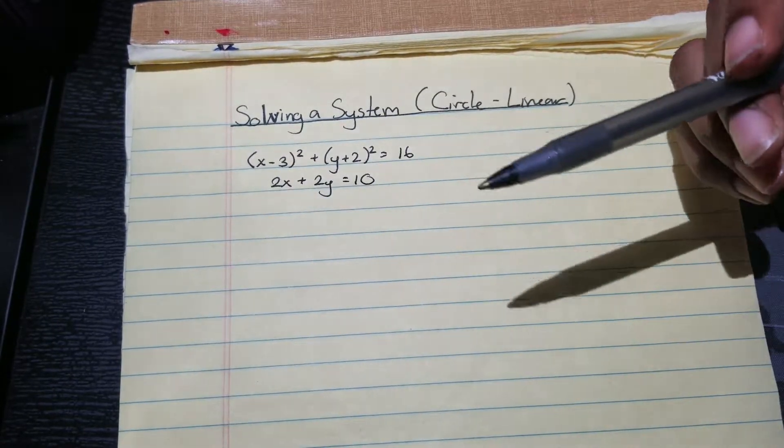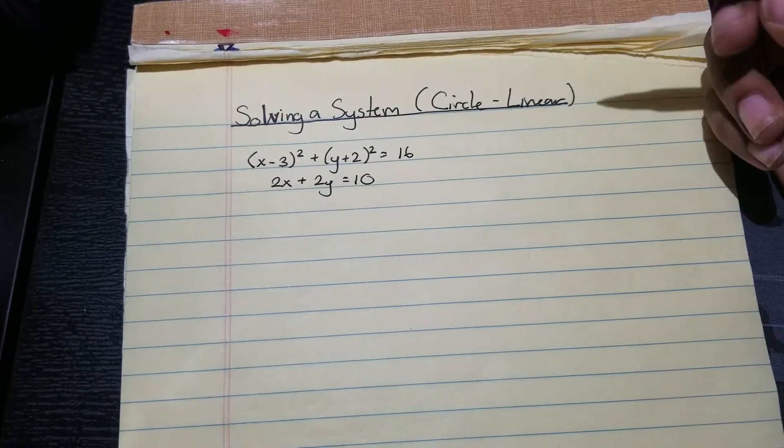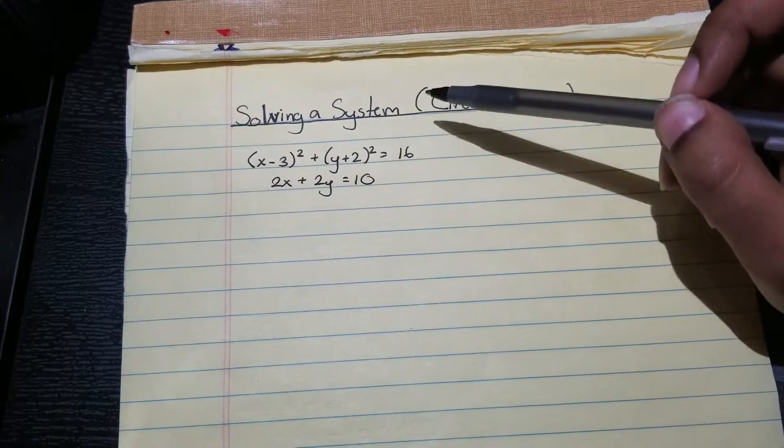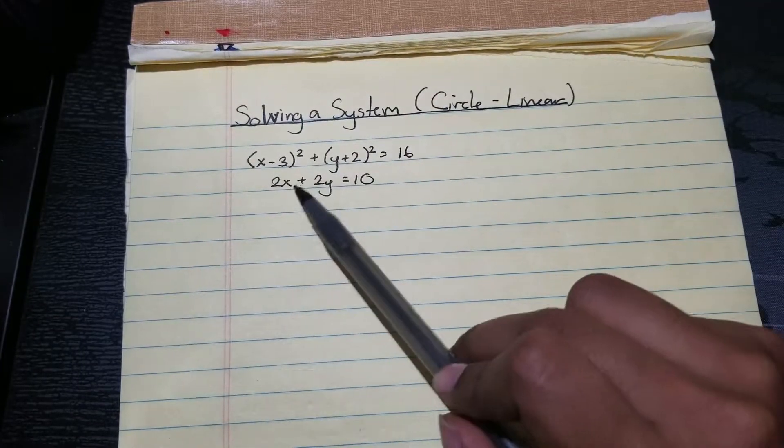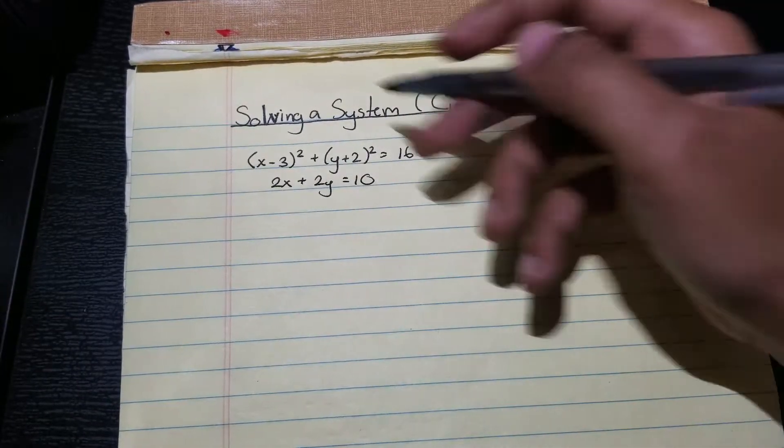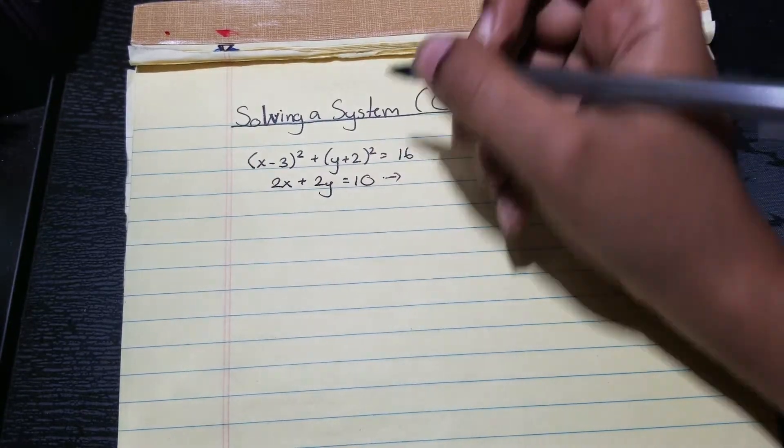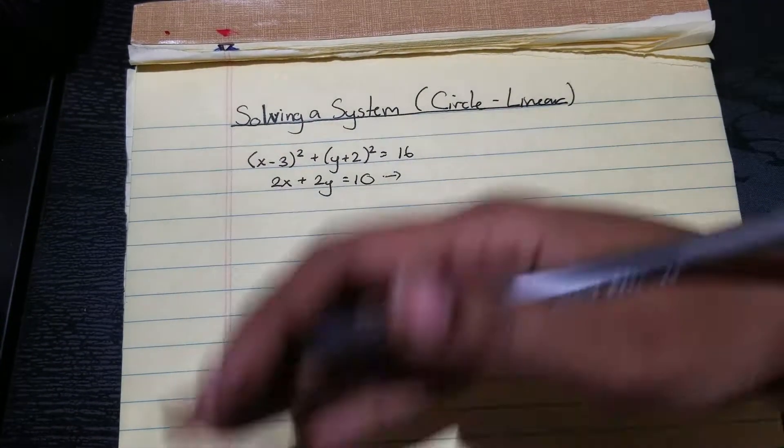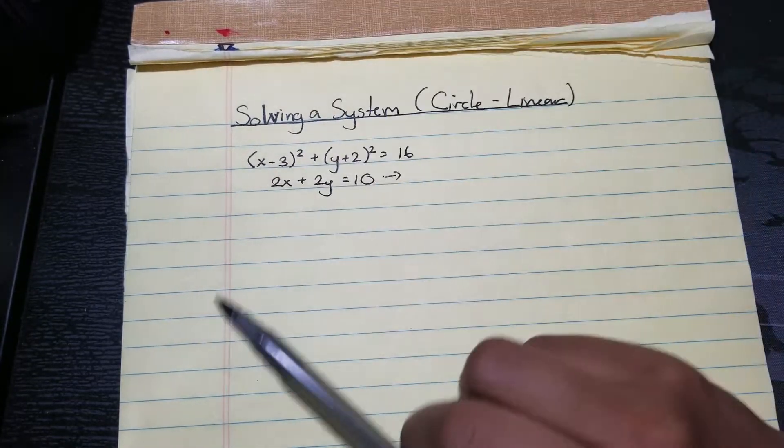And make sure it's in the y equals mx plus b form, and then we're going to substitute that into here. If you wanted to substitute for x instead of y, you can just make sure that however you manipulate your equation, it just makes it easier for you to progress through the problem.